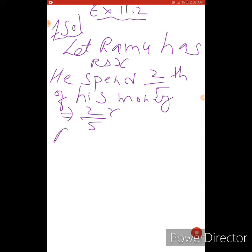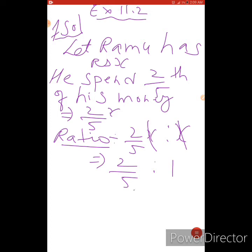Now what is the ratio? Ratio: 2 by 5X ratio X. This is amount of Ramu. This X and this X get cancelled. Next, 2 by 5 ratio is 1. Shift this 5 to this side. What's become? 2:5. 1 into 5 is 5. So how much of the amount is spent? 2:5.